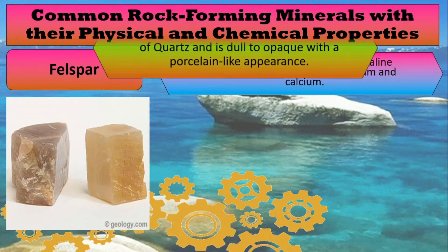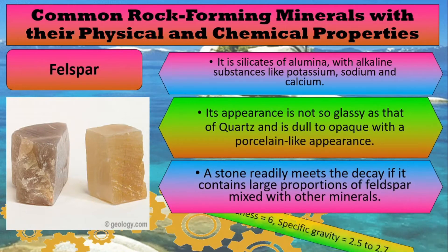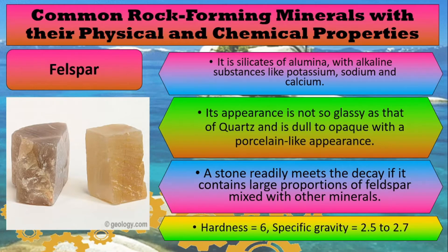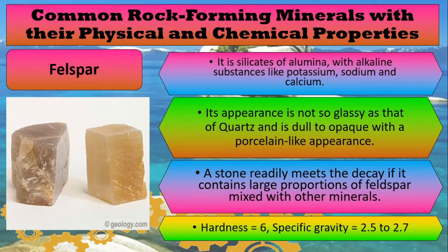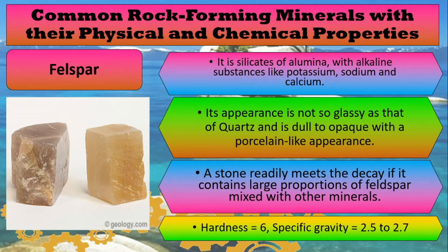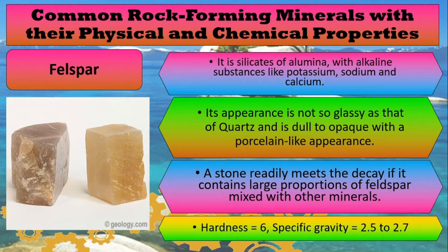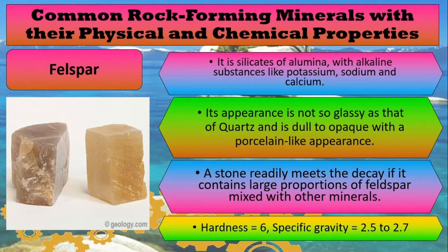Next is feldspar. Feldspar is a silicate of alumina with alkaline substances like potassium, sodium, and calcium. Its appearance is not as glassy as that of quartz and is dull to opaque with a porcelain-like appearance. A stone readily meets decay if it contains a large proportion of feldspar mixed with other minerals. Feldspar has a hardness of 6 and a specific gravity ranging from 2.5 to 2.7.